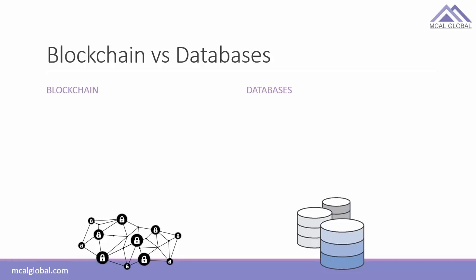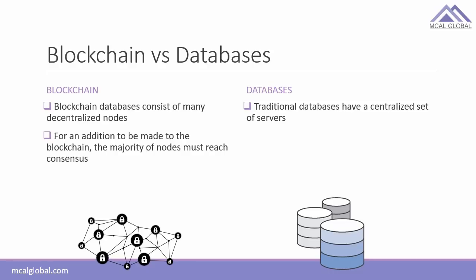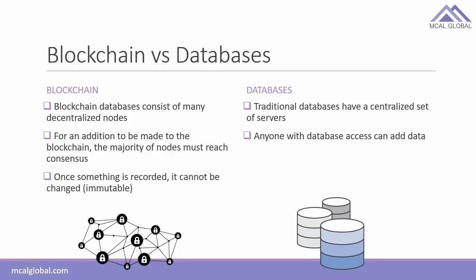Blockchain and databases are often understood to be the same thing, but they are different. Blockchain consists of many decentralized nodes, whereas a database has a centralized set of servers. In a blockchain, the majority of nodes must reach a consensus for an insert or addition to happen, whereas in a traditional database anyone with access can add data — no consensus required. In a blockchain, once something is recorded it cannot be changed; it's immutable. In a database, if you add something you can easily modify it if you have the right access.